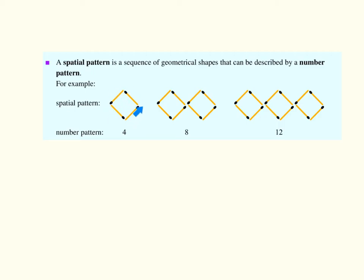if we go to that particular square over there, we have 4 matches to make that particular shape. If we have a look at that shape over there, we have 8 matches to make that shape. And if we go to that shape over there, we have 12 matches to make that shape.